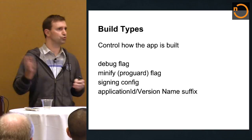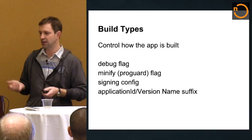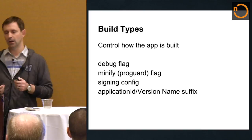Build types control how your app is built — typically debug versus release. If you want a debug version that accesses a staging server versus your production server, you can create a new one. You can create as many build types as you want. You have flags you can set on it, like whether it's debuggable, whether you want to run ProGuard, and signing configuration — so your debug is signed differently from your release build.